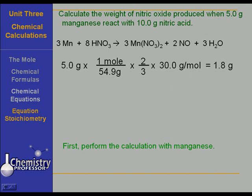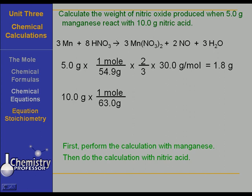Now let's try it with nitric acid. We have 10 grams of nitric acid times 1 mole over 63 grams times a 2 to 8 mole ratio. 2 moles of nitric oxide produced for every 8 moles of nitric acid used times 30 grams per mole gives us 1.2 grams.